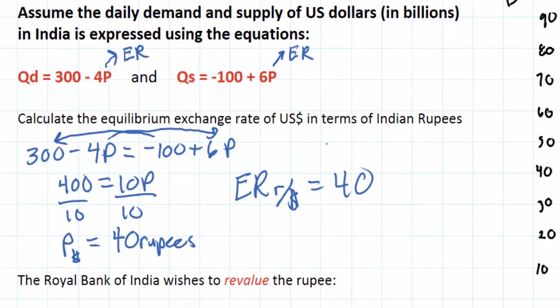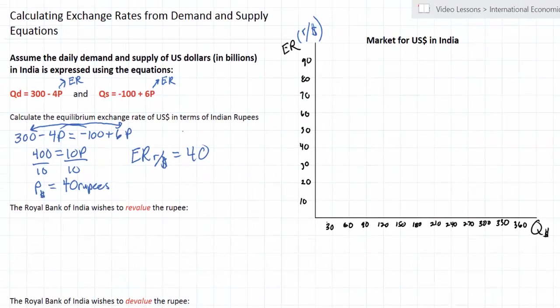We can now plot the demand and supply curves for US dollars in our graph on the right. To do that we must find a couple of points. We need to know the Q intercept of demand — in other words, where does the demand curve cross the quantity axis? That is in fact 300, the 'a' variable in our equation, so I can put that point right here.